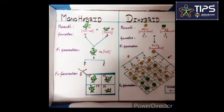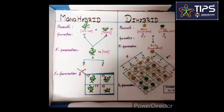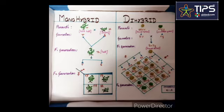Mono refers to single and hybrid means mixed to breed. Monohybrid cross is used to study the inheritance of a single pair of alleles.